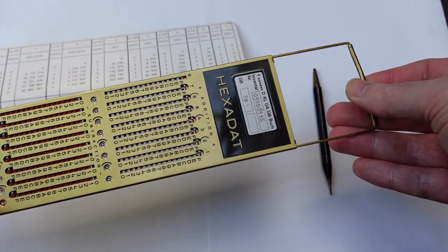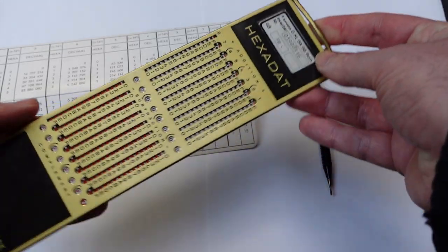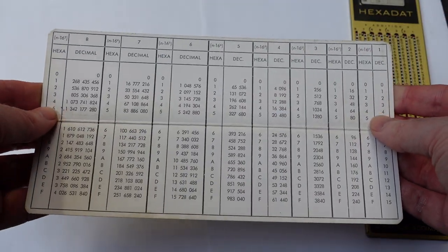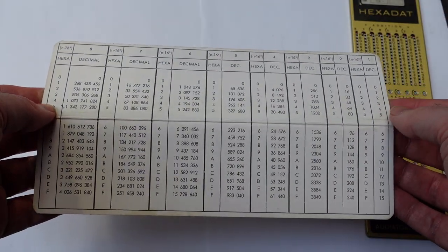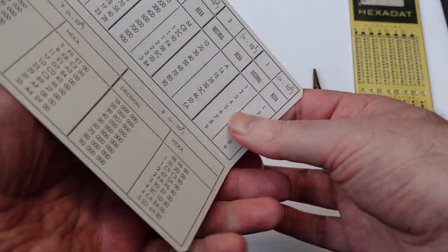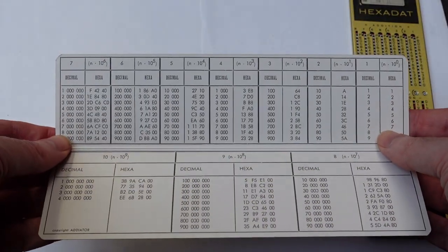I'm going to clear it using this bracket. Pull this up. There we go. To go the other way, from decimal to hexadecimal, we use the table on this side.